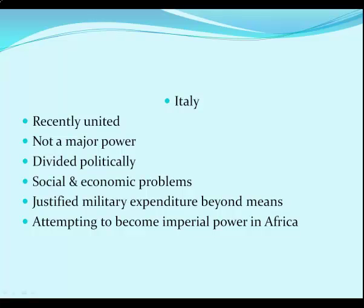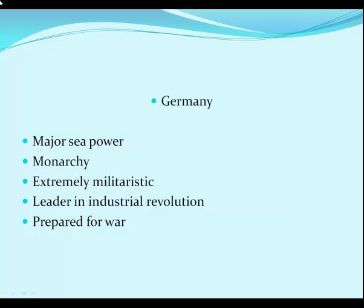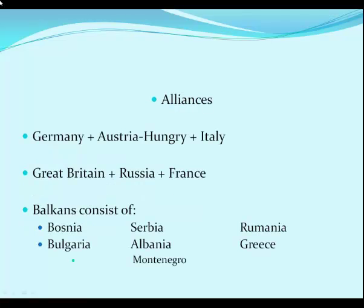Italy was very recently united as a country and not a major power, though they badly wanted to be. They were very divided politically, had mammoth social and economic problems, were spending beyond their means on the military, and wanted colonies like everyone else. Germany was a major sea power, an absolute monarchy, extremely militaristic, and one of the leaders of the industrial revolution. Of all the countries in Europe, Germany was best prepared for war — with transportation, railroads, mammoth factories, trained armies, and the people behind her.